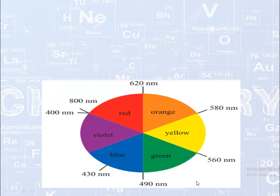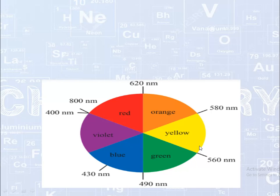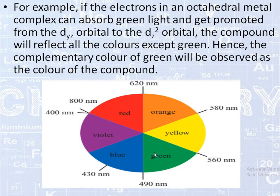The color observed corresponds to the complementary color of the light absorbed. In this chart, we can identify the complementary colors — they are placed diagonally opposite to each other. For example, when red color is absorbed, the transmitted complementary color is green. If the electrons in an octahedral metal complex absorb green light and get promoted from a lower orbital such as d-yz to a higher orbital such as d-z², the compound will reflect all colors except green. Hence, the complementary color of green — which is red — will be observed as the color of the compound.